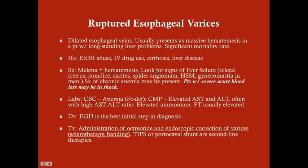You should look for signs of liver failure, which you would see in most patients with esophageal varices since the liver is usually the underlying problem. Look for scleral icterus, which comes before jaundice. Other findings include ascites — showing portal hypertension — spider angiomata, hepatosplenomegaly, and gynecomastia. The liver is responsible for breaking down estrogen, so in men with liver failure, estrogen levels go up and cause gynecomastia.